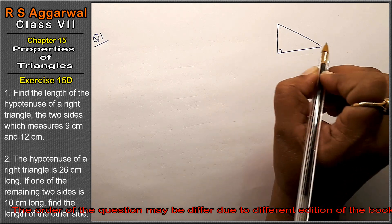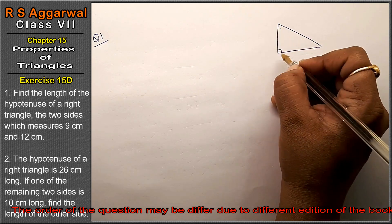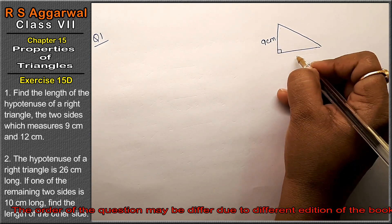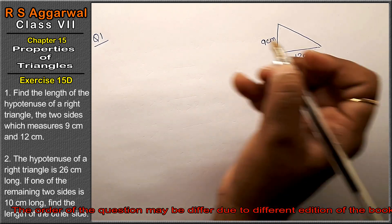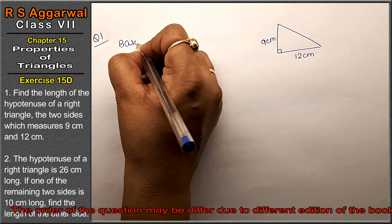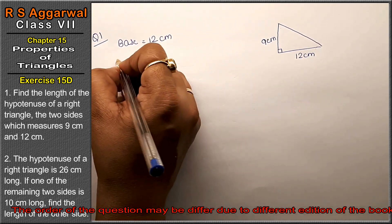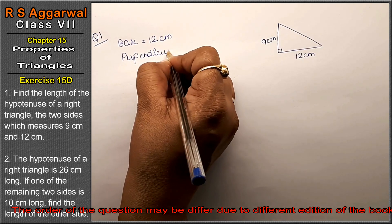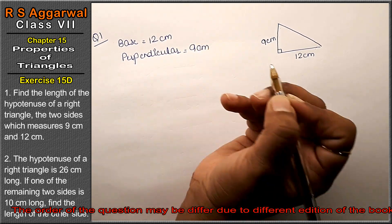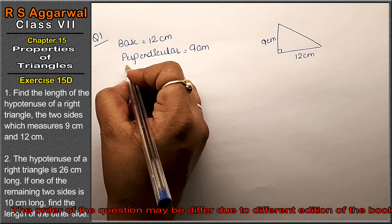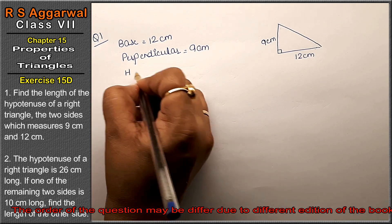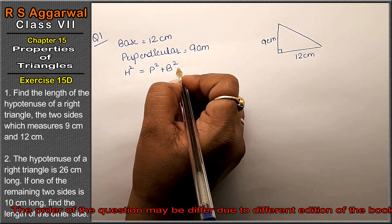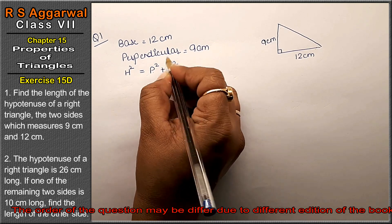It is not specified whether the base is 12 or the perpendicular is 12. So we will take the perpendicular as 9 cm and the base as 12 cm. We have to find the hypotenuse. The formula is: H squared equals P squared plus B squared, where P means perpendicular and B means base.